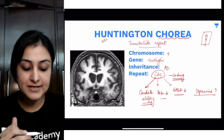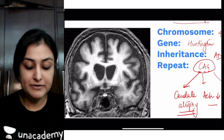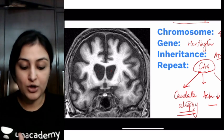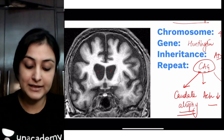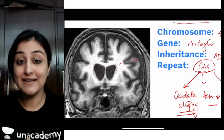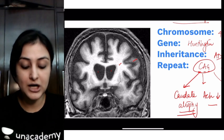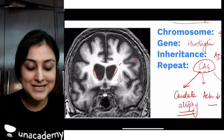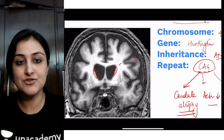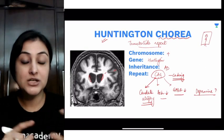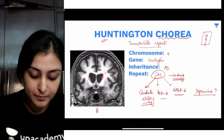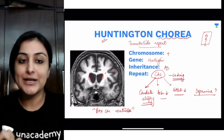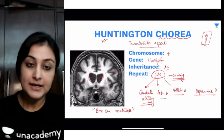The inheritance is autosomal dominant. On MRI, we see that the lateral ventricles' frontal horns become more and more prominent. On a coronal T1-weighted image — white matter is white, gray matter is gray — we see the lateral ventricles with the caudate, which has become very atrophied. Bilateral caudate atrophy resulting in prominent ventricles creates the appearance called boxcar ventricles, which is the classic MRI sign in Huntington's chorea.